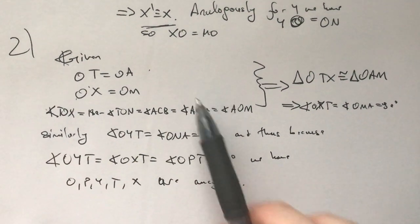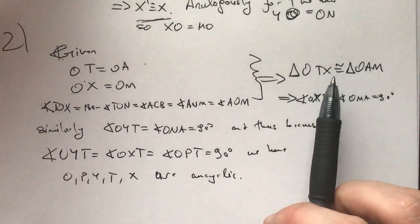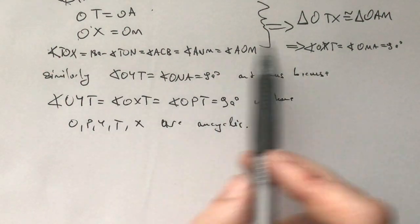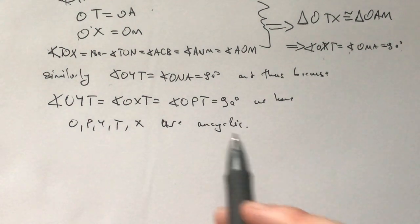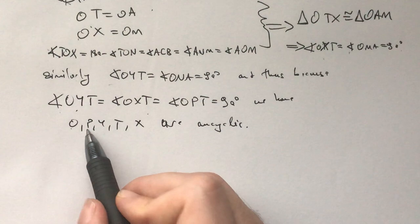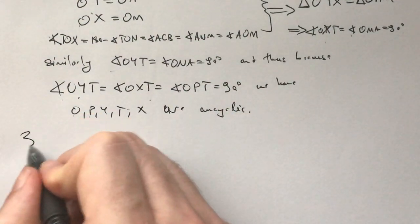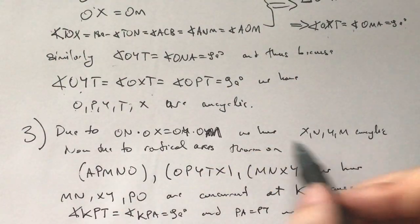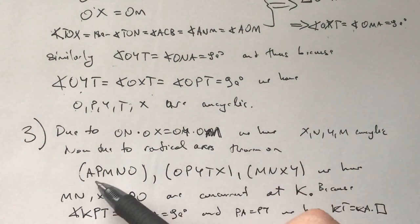Which is we prove that now given OA is OT, OX is OM. And the angle TOX is equal to gamma, which is AOM. And then we have a congruency. And now from this congruency, we get that the angle OXT is 90 and similarly OYT is 90.